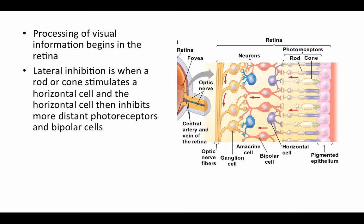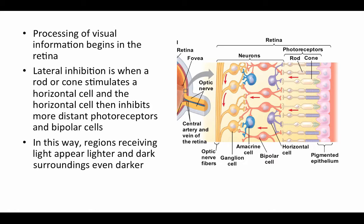We mentioned that not all integration necessarily happens within the central nervous system — some processing of visual information begins in the retina before transmission to the CNS. One of these cases is lateral inhibition. Photoreceptors communicate not just with bipolar cells but also with horizontal cells, which communicate with other more distant photoreceptors. Lateral inhibition is when a rod or cone stimulates a horizontal cell, and the horizontal cell then inhibits more distant photoreceptors and bipolar cells. In this way, regions receiving light can appear lighter, and dark surroundings can appear even darker.